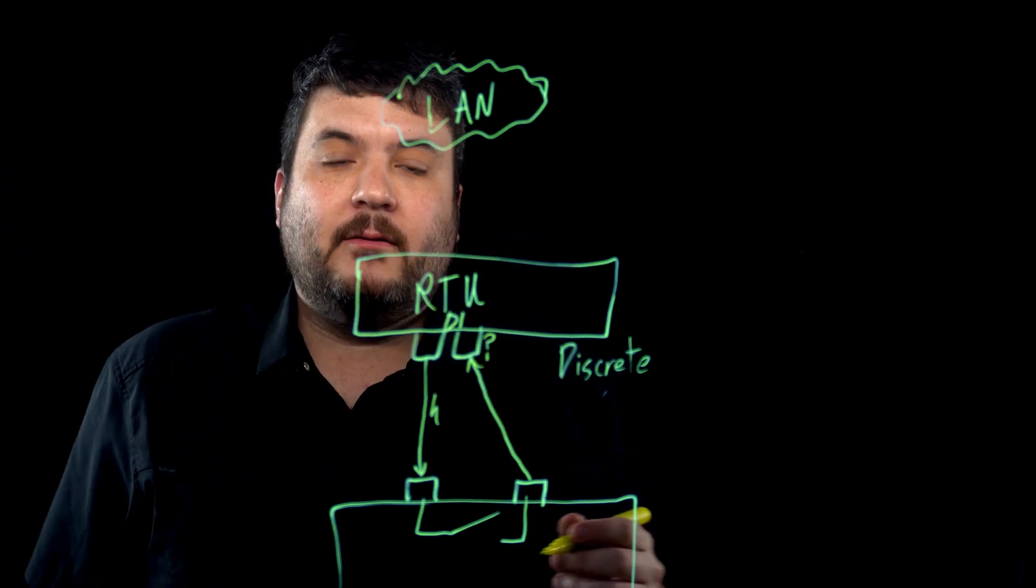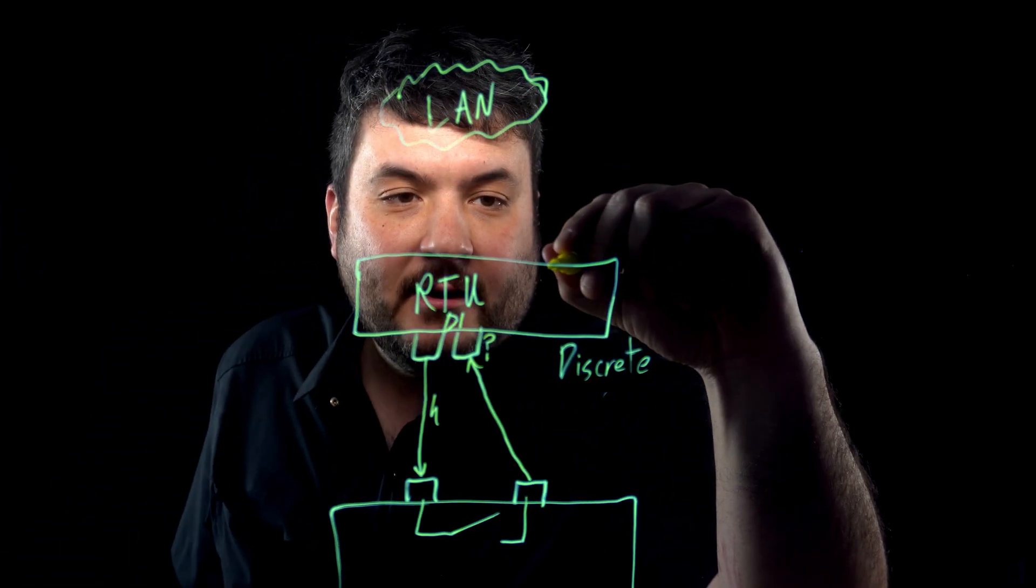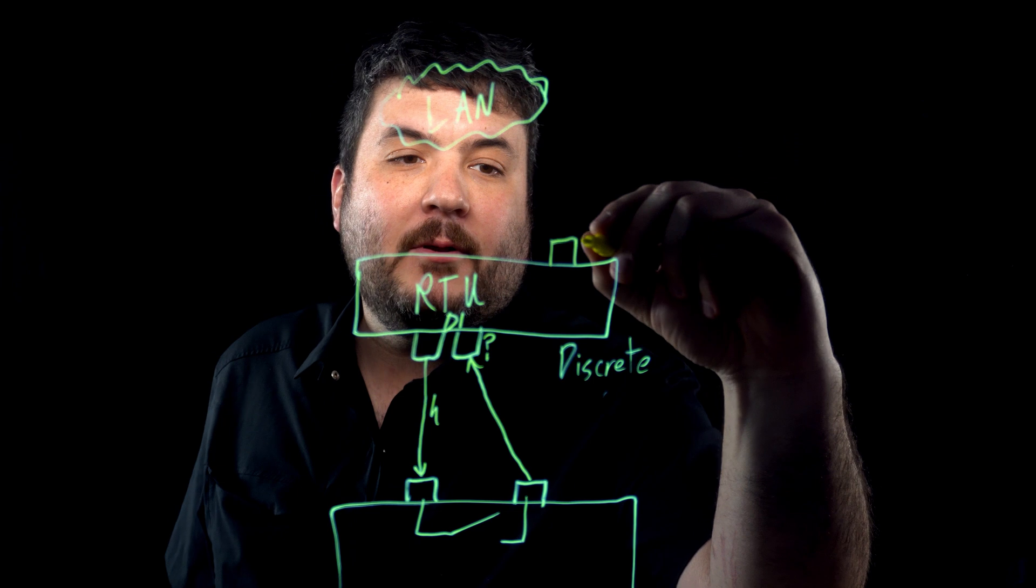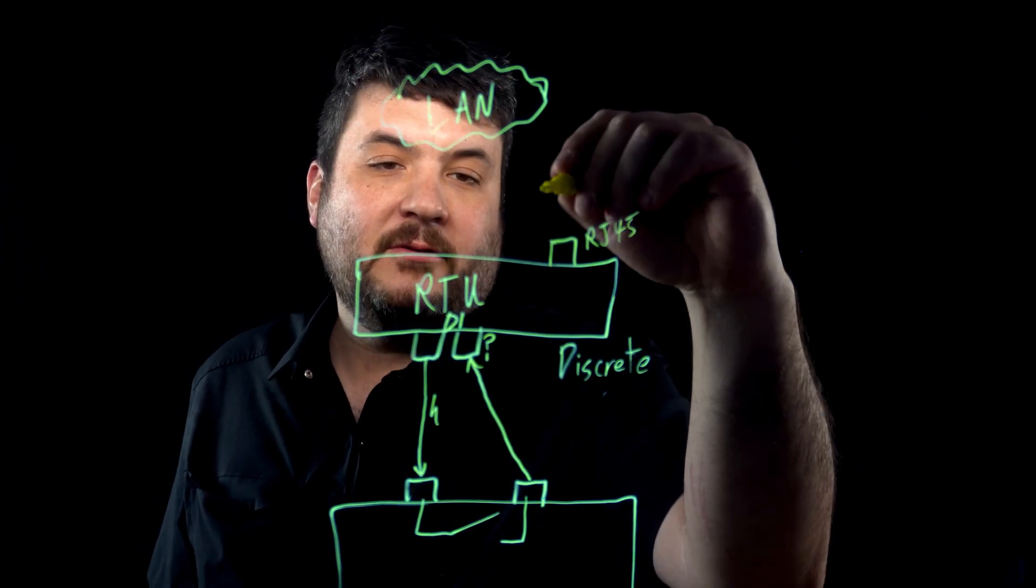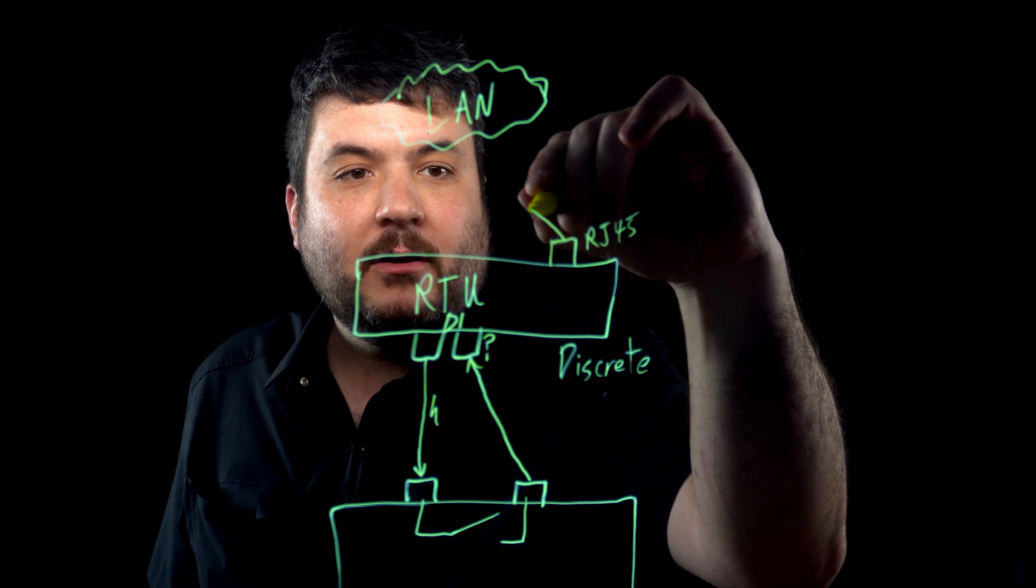So, once the RTU knows that, now this thing is LAN capable. It has usually an RJ45 connector to hook into a standard Ethernet system. So, that's going to go up here. And in what form is that?